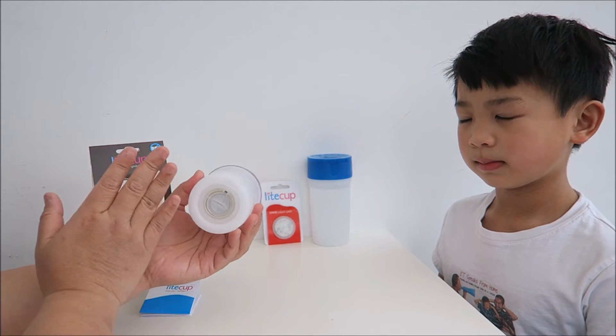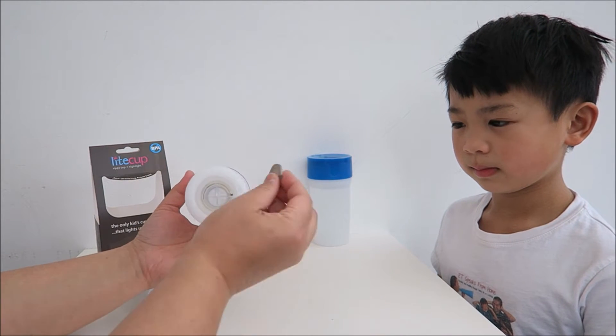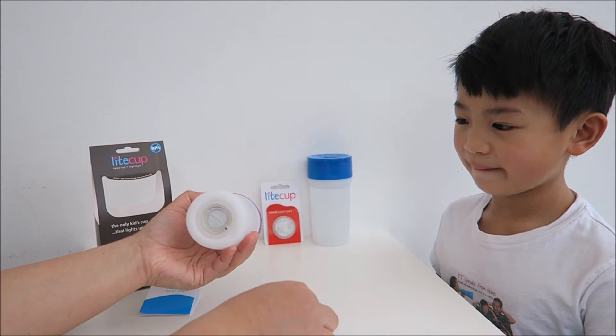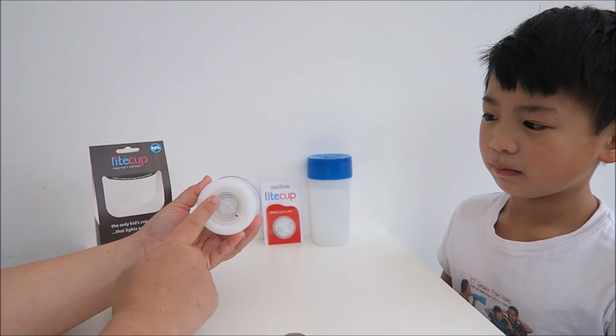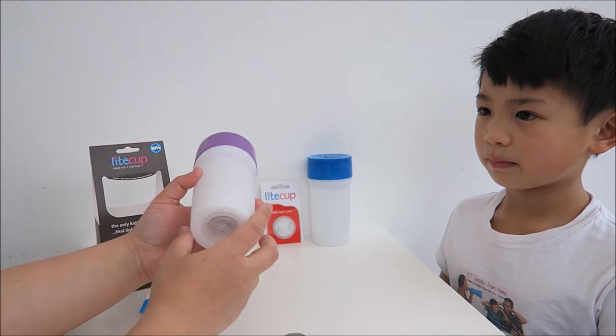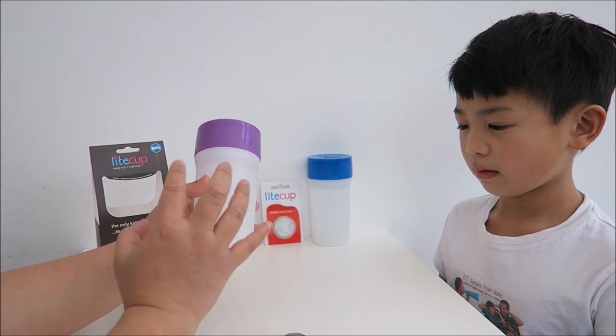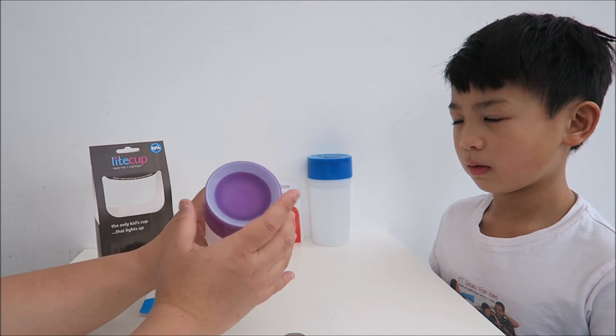So when you get the cups, you have to turn it on. At the moment, it's off. So you use a coin, turn it and then you will turn on the night light. So this will activate. So when it's very dark, the night light will shine the blue light.